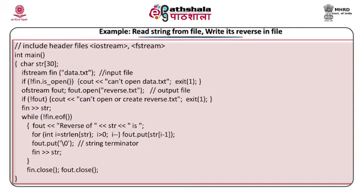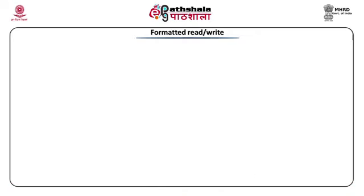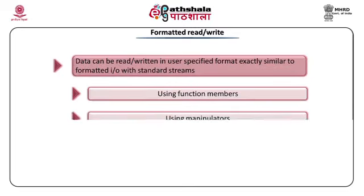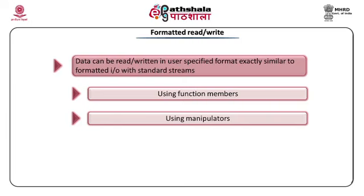Formatting of data is also done exactly the same way as with standard IO streams cin and cout. We use three format variables: width, fill character, and precision, and format flags for horizontal alignment, scientific or fixed decimal format, showing the decimal point, showing the base, and so forth. We can use manipulators and function members exactly as with standard streams — the only difference is we are using file stream objects instead of standard streams.